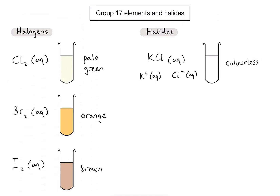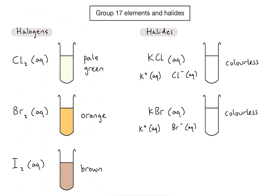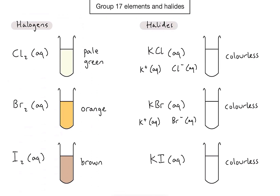The second halide solution we're going to look at is potassium bromide — also colourless — and again if I were to zoom in I'd find potassium ions and bromide ions floating around. And finally potassium iodide solution, which is also colourless, contains both potassium ions and iodide ions floating around independently.